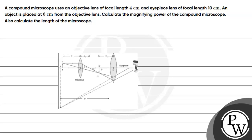Hello Bacho, let's read the question. A compound microscope uses an objective lens of focal length 4 cm and eyepiece lens of focal length 10 cm. An object is placed at 6 cm from the objective lens. Calculate the magnifying power of the compound microscope. Also calculate the length of the microscope.